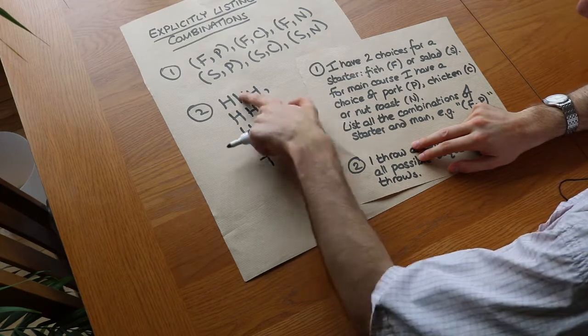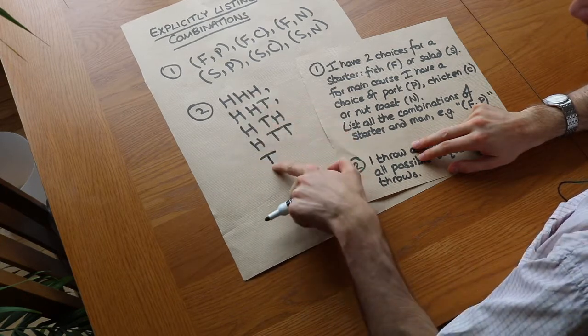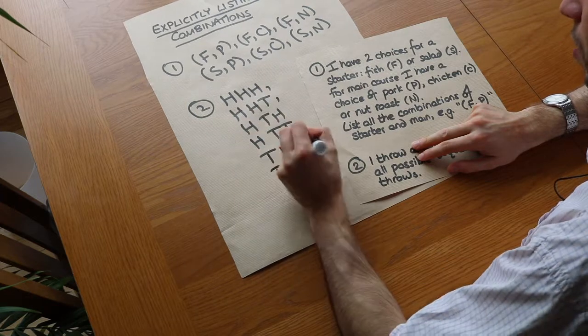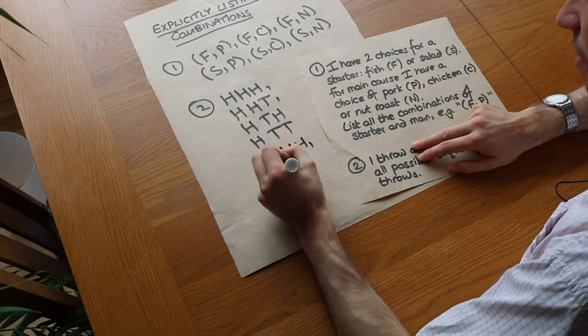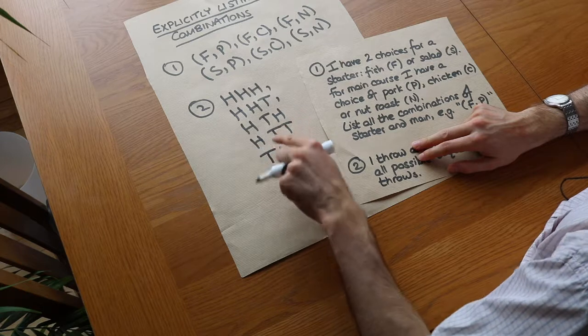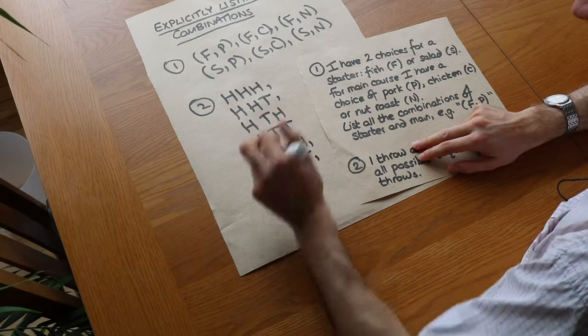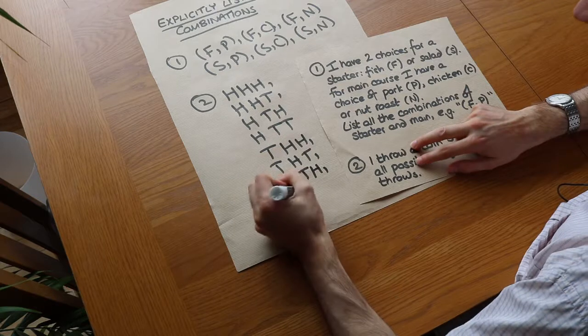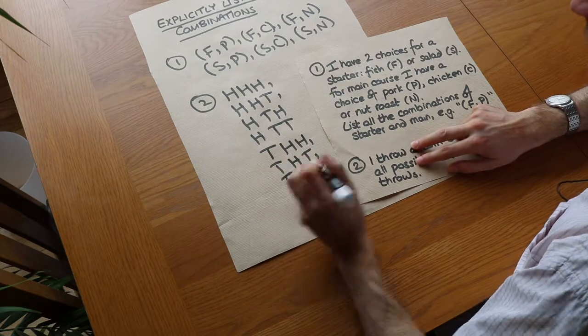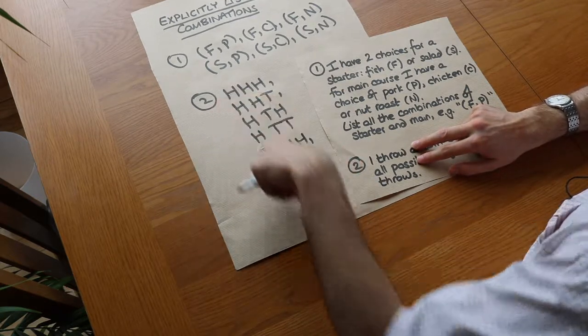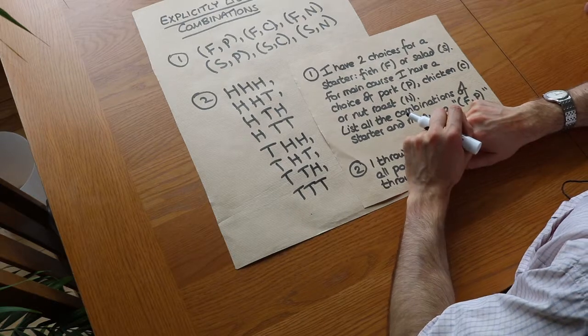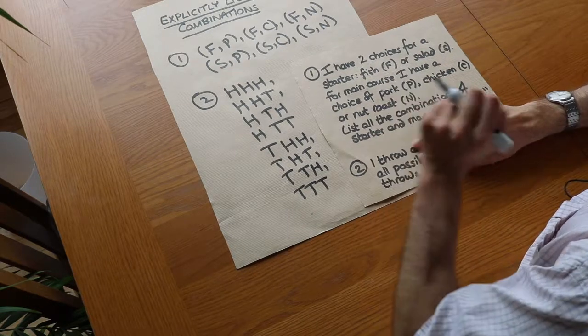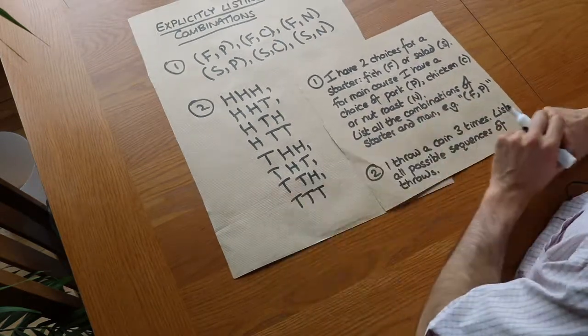And then we find all the ones which start with tails. So it could be tails and then we could use these combinations again. It could be tails with heads heads, or tails with heads tails, or tails with tails heads, or tails with tails tails. And that way we've got a really nice order to how we listed these possible sequences of throws, and it also ensures that we're not going to leave any possibilities out.